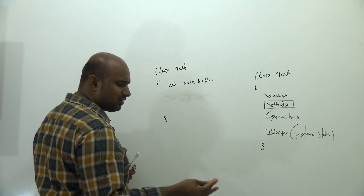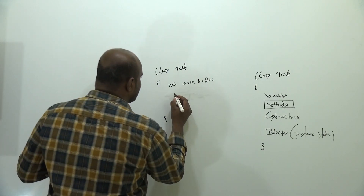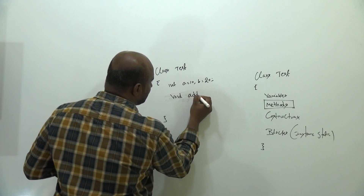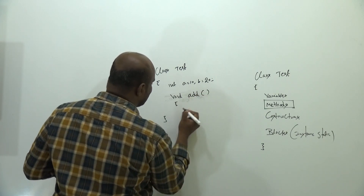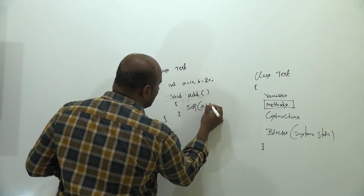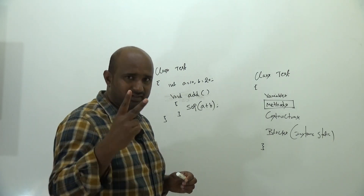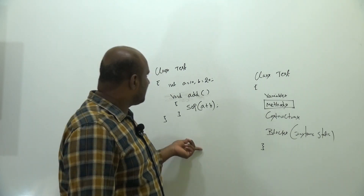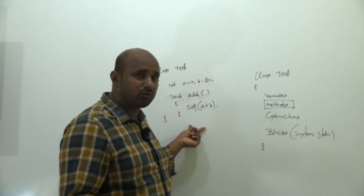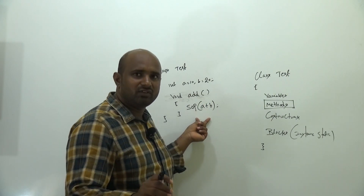Inside the class, directly writing business logics is not allowed. So inside the class, define the method. Inside the method, you can write the logics. For example, declare void add() method, and inside that method write system.out.println of a plus b.